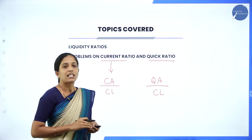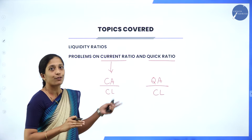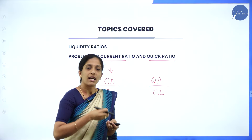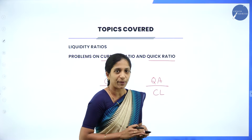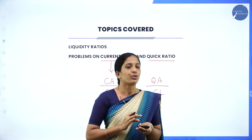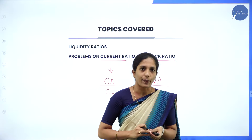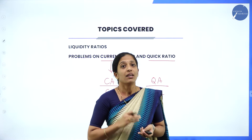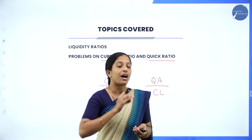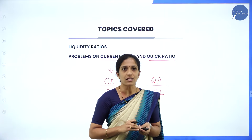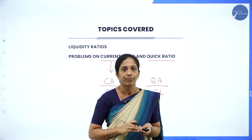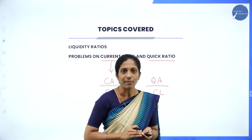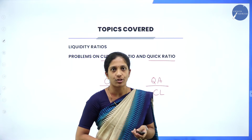As per the earlier question paper pattern, they used to ask for 6 marks under liquidity ratio, covering current ratio as well as quick ratio. But as per the revised question paper pattern, you will not get a question from liquidity ratio.